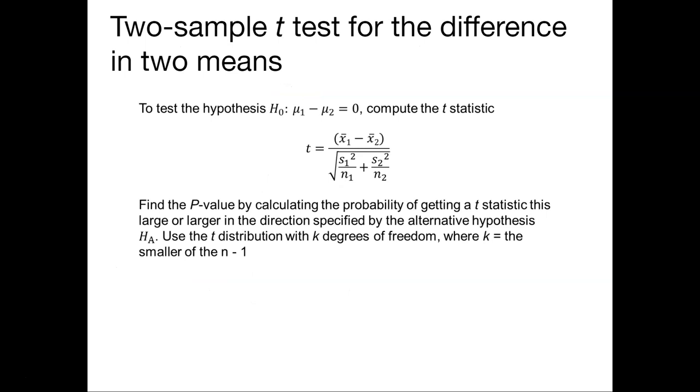Now the two sample t-test is comparing the difference between two means. And so here our null hypothesis will be that mu 1 minus mu 2 equals 0. That would indicate that they're both the same values. And so we'll calculate our test statistic like we saw before. And we're going to want to find the p-value by calculating the probability of getting a t-statistic this large or larger in the direction specified by the alternative hypothesis h sub a. And so we'll use the t-distribution again with k degrees of freedom that's the smaller of the values of n minus 1. And so this will be important if we have two samples with different numbers of observations in each of those samples.